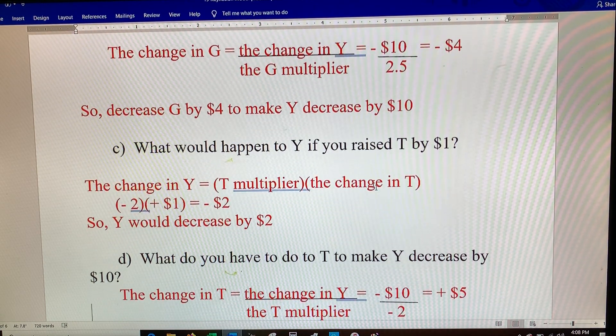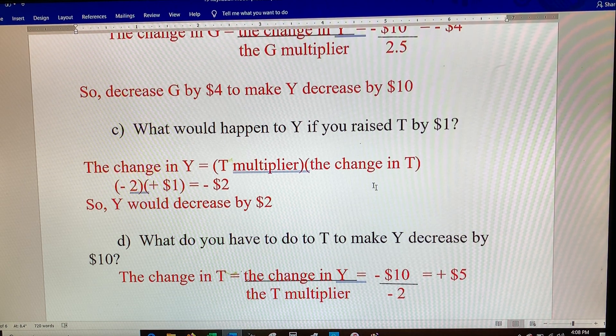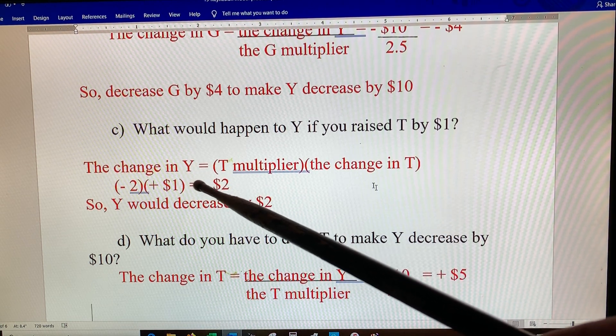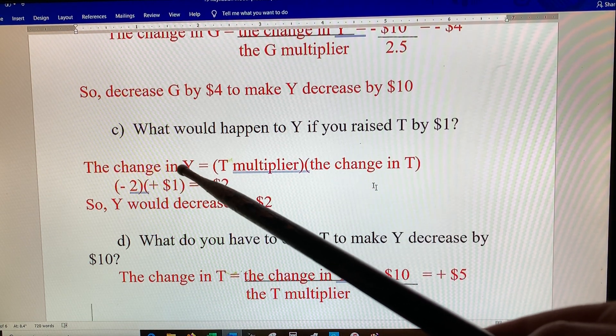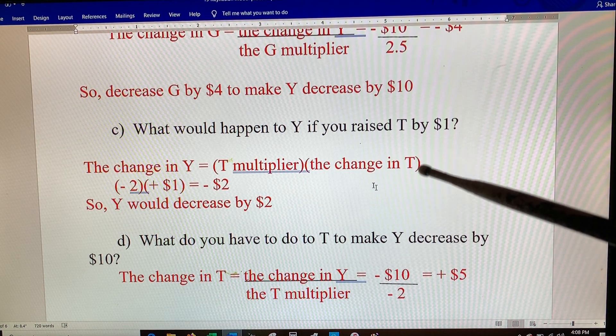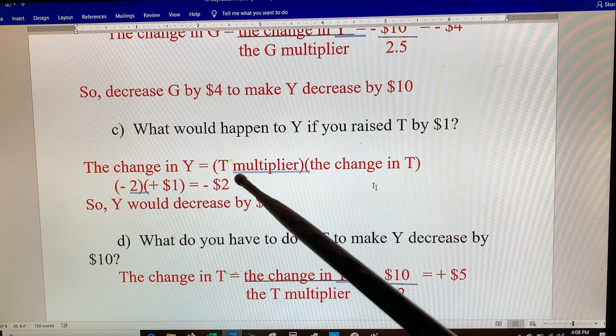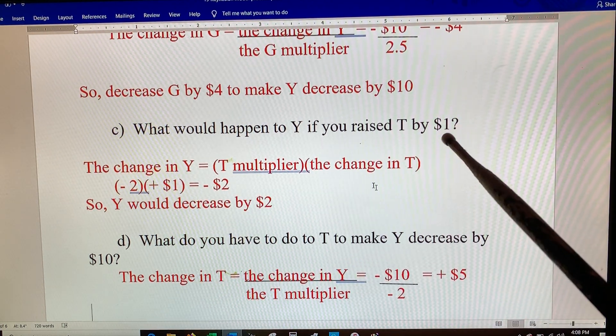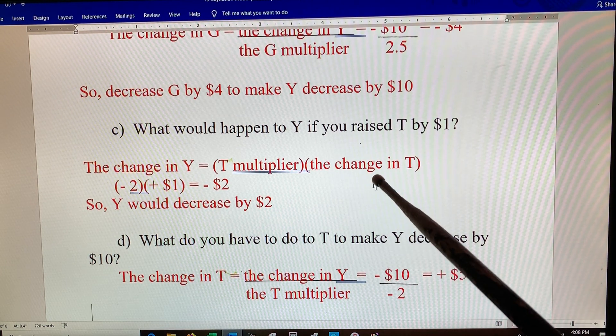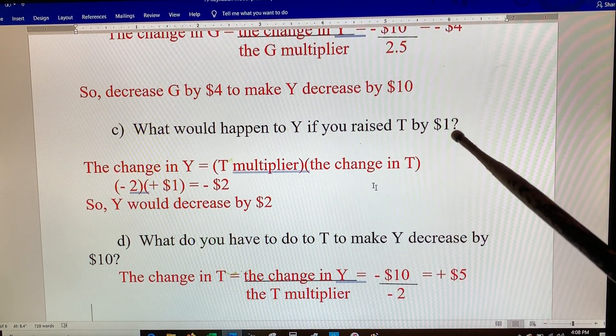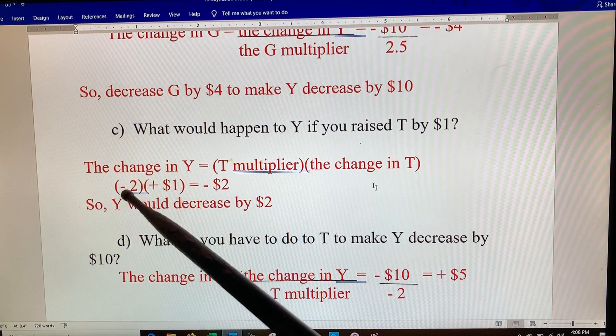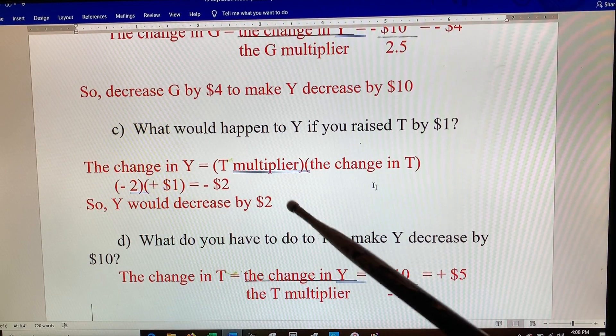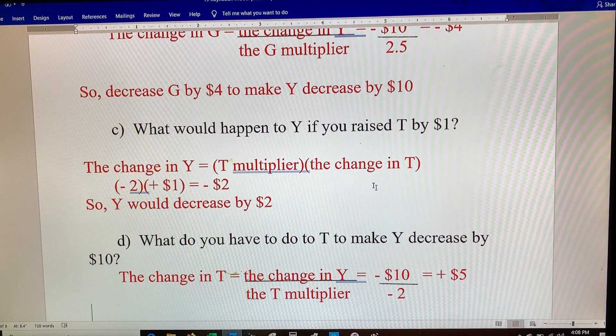Here for the tax multiplier, what would happen to GDP if you raise taxes by a dollar? To repeat the meaning of the multiplier: the change in Y is the multiplier times the change in T. Remember your multiplier for T is minus two. So a plus one, the change in T if you raise taxes by one, so that'd be a plus one times the multiplier, would be a negative two dollars. The change in Y would drop by two dollars if you raised taxes by one dollar.